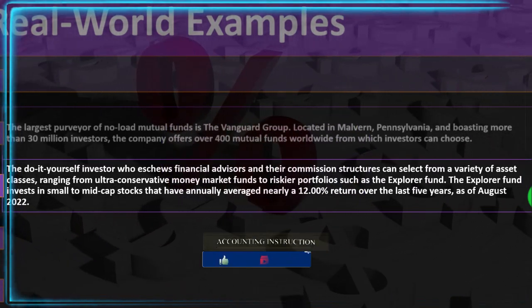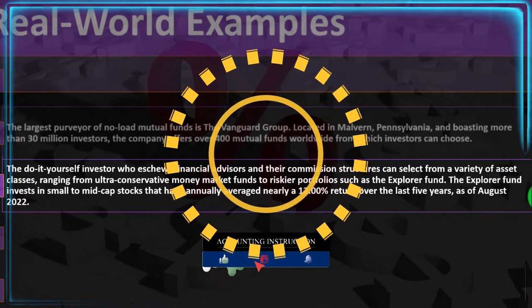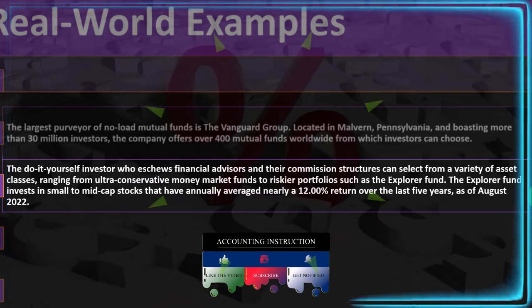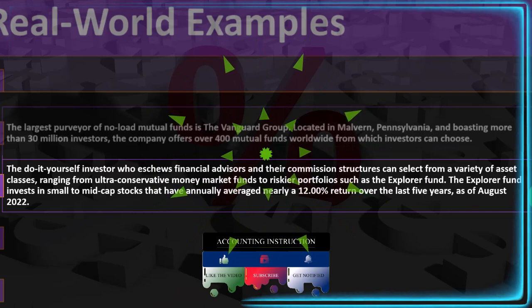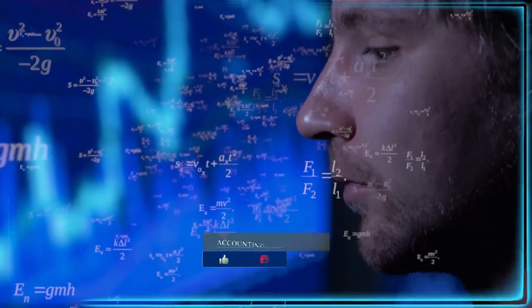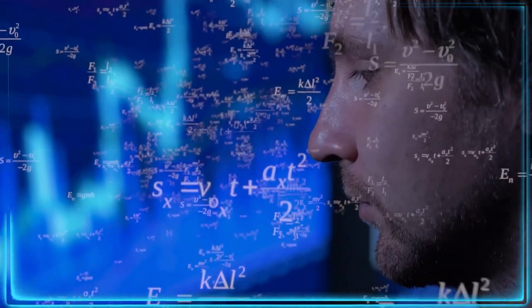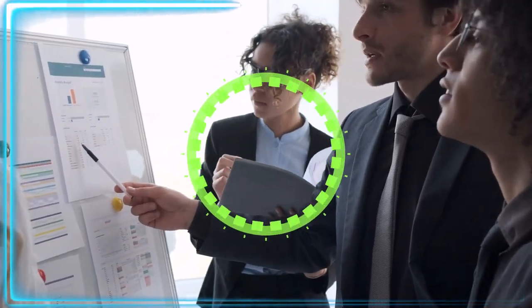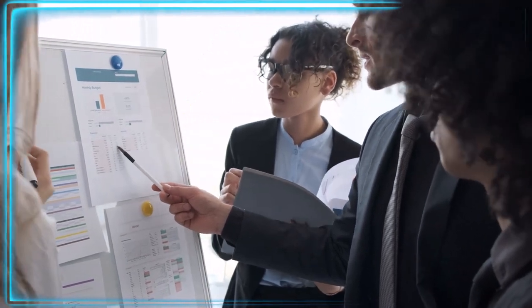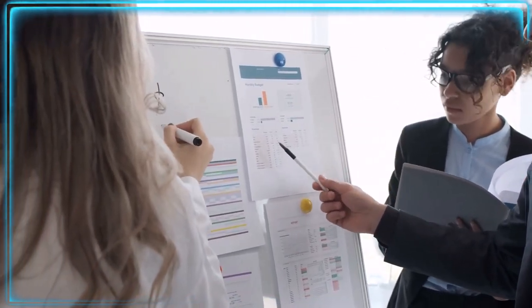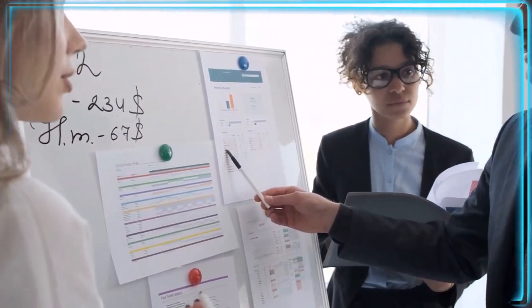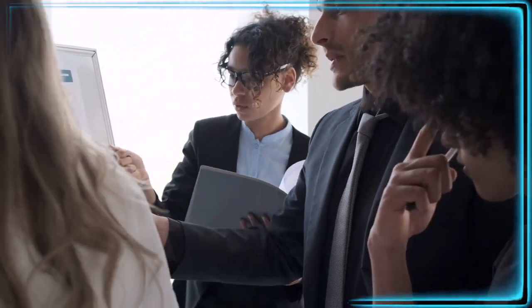One example is Vanguard's Explorer Fund, which invests in small to mid-cap stocks and has annually averaged nearly 12% return over the last five years as of August 2022. When considering these mutual funds, you think about strategy — do you want the fund manager to have more control and pay a higher expense ratio, hoping they beat the market? Or do you prefer index funds or a target retirement fund with lower expense ratios?